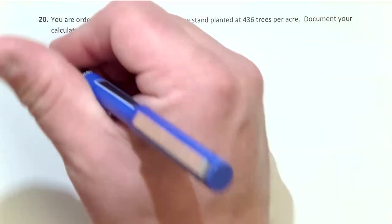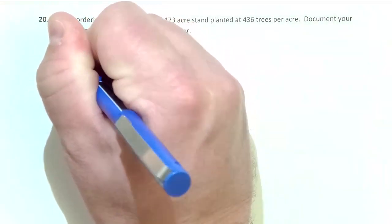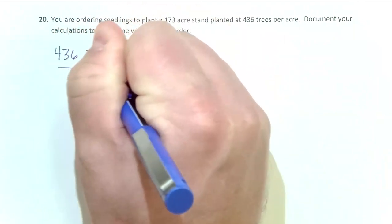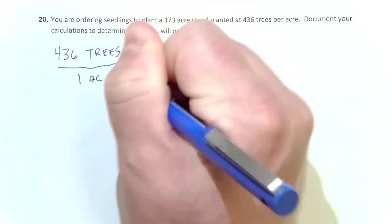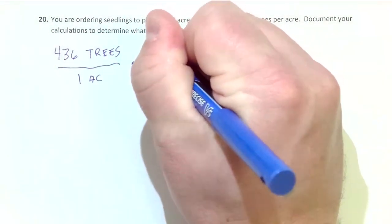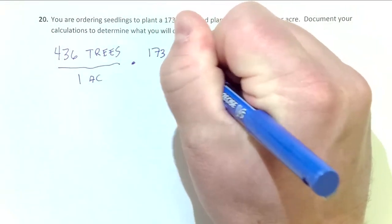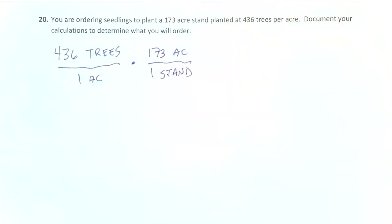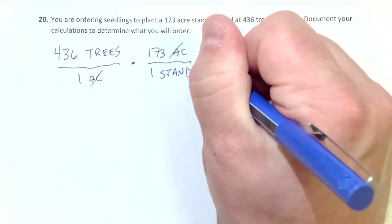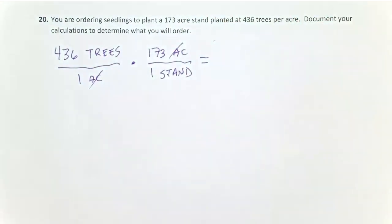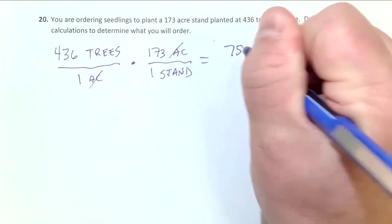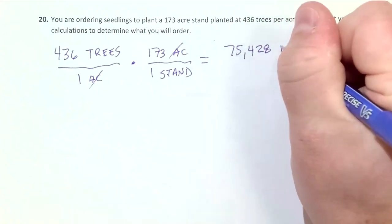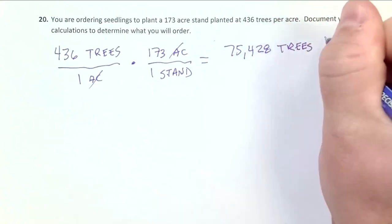And so when we look at this problem, pretty straightforward, 436 trees go on one acre, and we have 173 acres on our one stand. I cancel out units there, and that means that I am going to need to order 75,428 trees for this one stand.